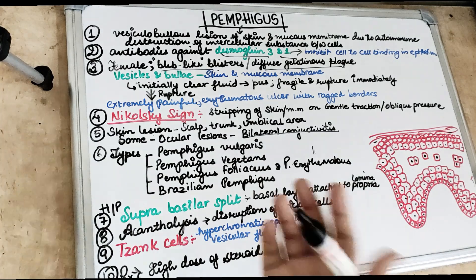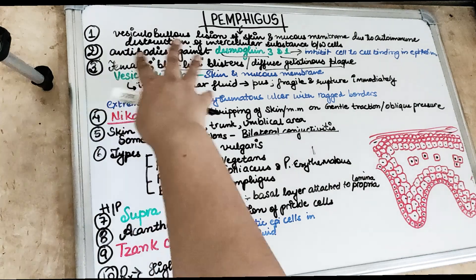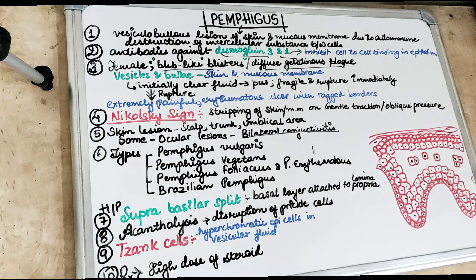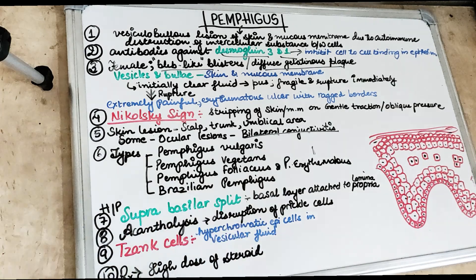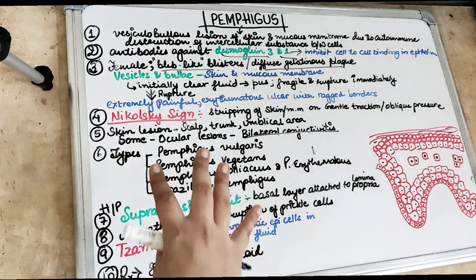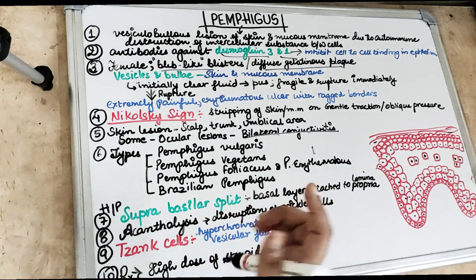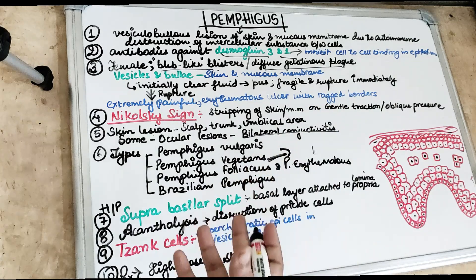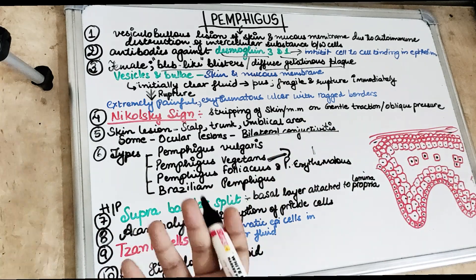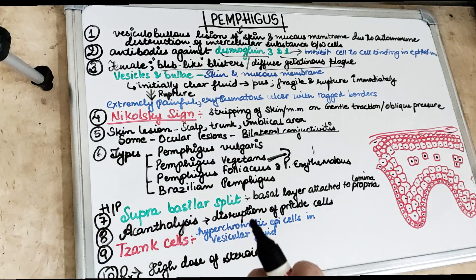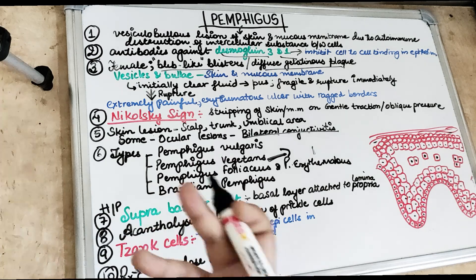There are several types of pemphigus. Pemphigus vulgaris is the most common type. Pemphigus vegetans is similar in most respects to pemphigus vulgaris, but a typical feature is the cribriform tongue — a specific pattern of tongue lesions. In pemphigus vegetans there is papillomatous hyperplasia, and as the name suggests, there is vegetation.